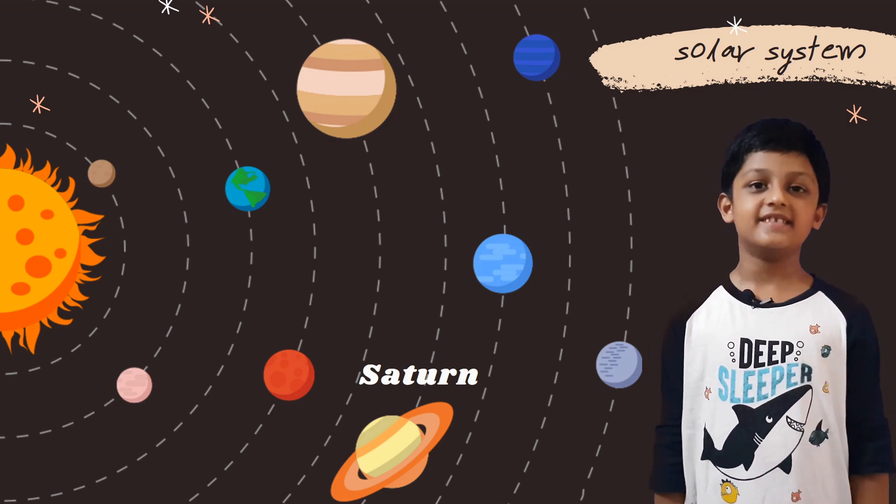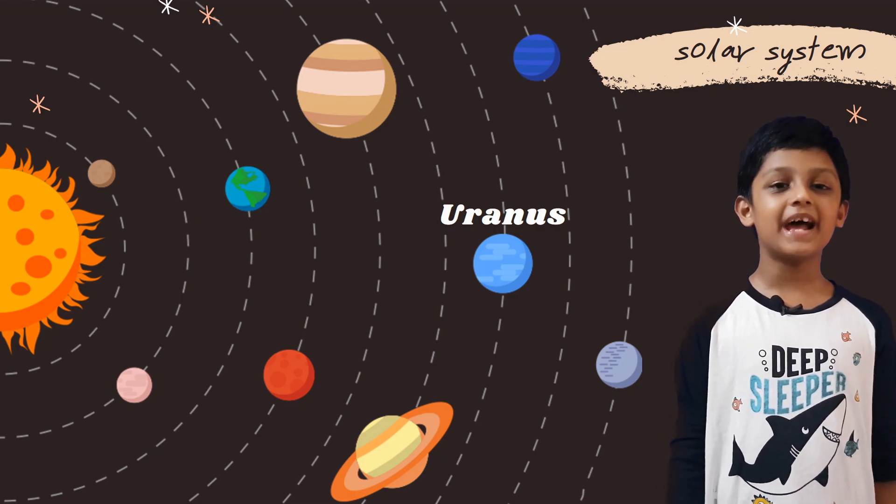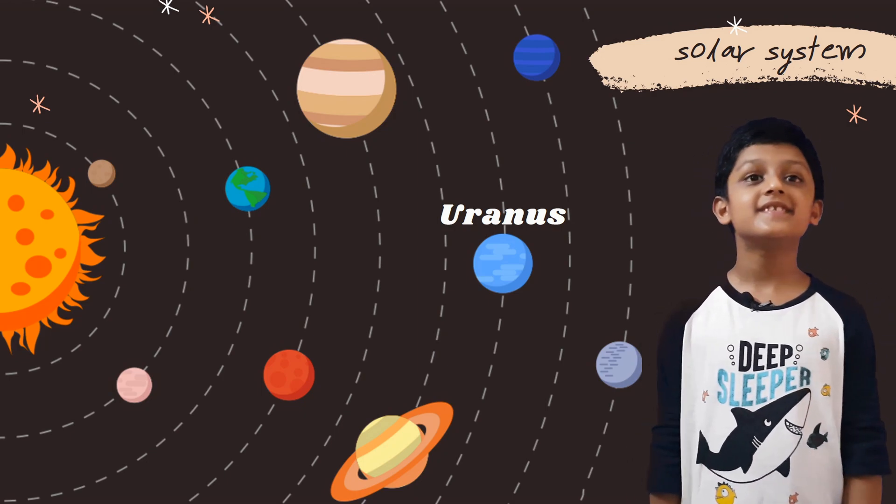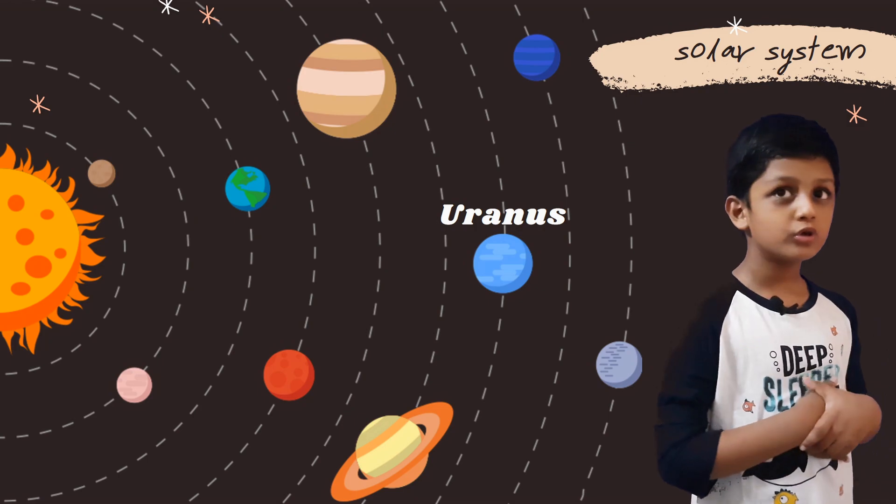Uranus, it is the seventh planet from the sun. It has twenty-seven moons and it is the cold planet.